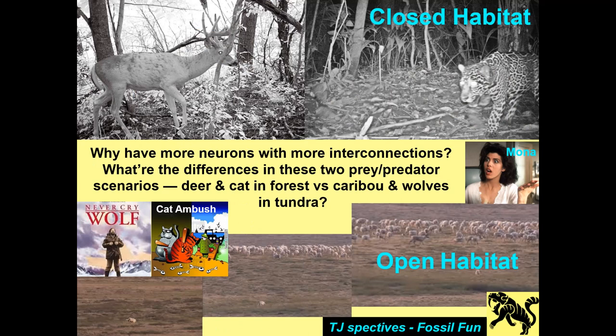Let's compare a closed habitat situation to an open habitat situation. Why do you need more neurons and more interconnections in open habitat? Look at two prey-predator scenarios: a deer and a cat in a forest versus a caribou and wolves in the tundra. You're a deer walking through the woods, stop at a pond to get a drink, and boom — a cat attacks you. The interaction lasts seconds — an ambush predator jumps, you react, you run, you might get away. Not a lot of decisions to be made.